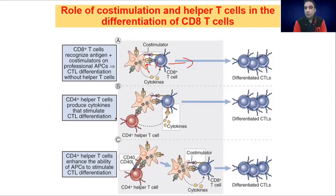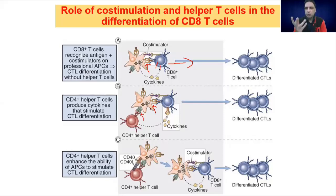One of them is CD4 helper T cells. CD8 cells connect with the dendritic cell via MHC class 1, while CD4 cells connect with the dendritic cell via MHC class 2 — they communicate with the same cell using different receptors. It is possible one dendritic cell connects both types of cells at the same time. Once the CD4 cell connects with the dendritic cell, it also produces cytokines, so both the dendritic cell and CD4 cells can produce cytokines that activate CD8 cells.